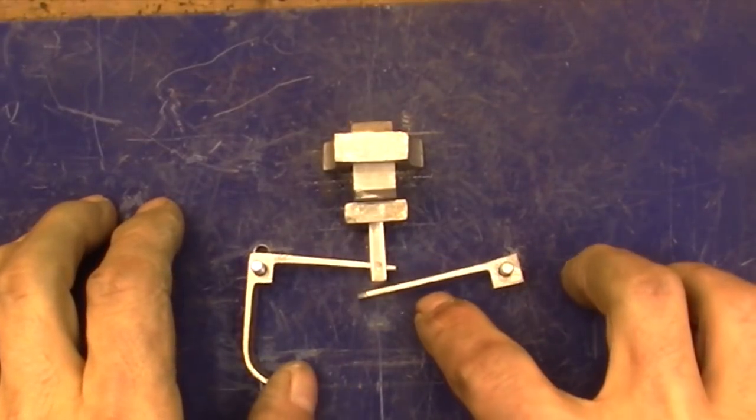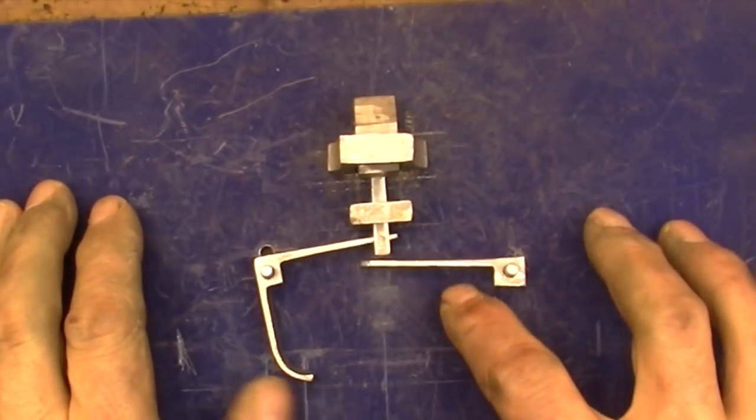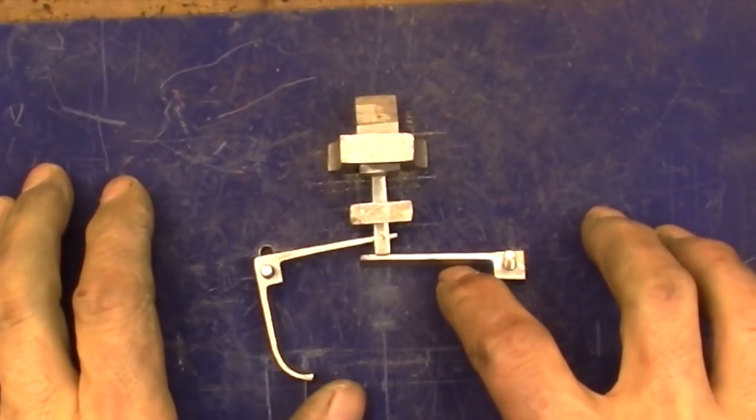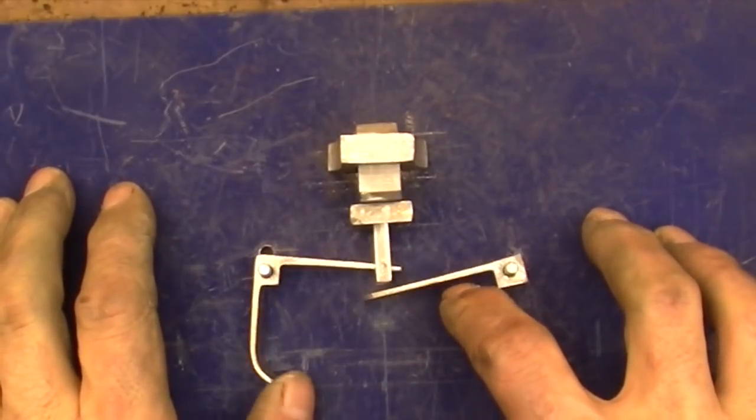So this is what we're after. The push rod is going to pull the bolt back into the lock and then when the key is removed the spring is going to push the bolt back into its original position.